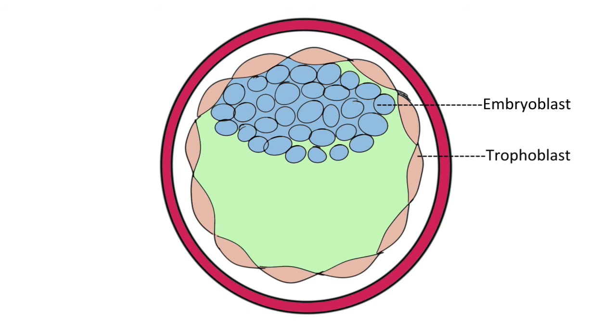So what we have now here is the outer trophoblast, and then the inner embryoblast cells pushed to one side, and the rest of the area which forms the blastocyst cavity filled with uterine fluid. The entire thing is surrounded by zona pellucida, and this structure is called blastocyst.